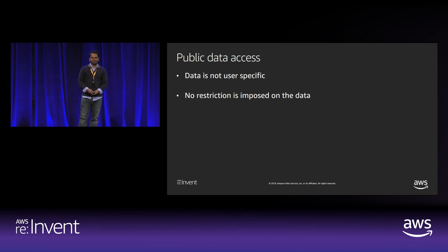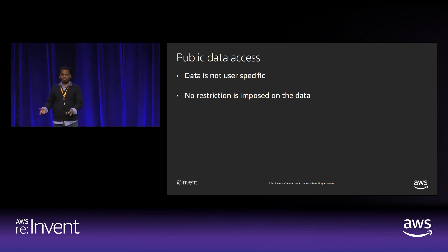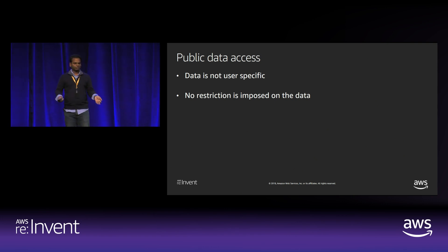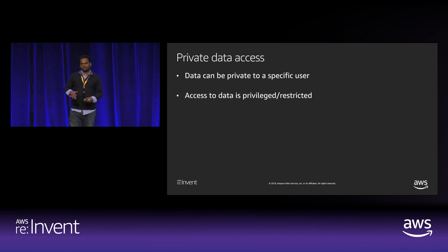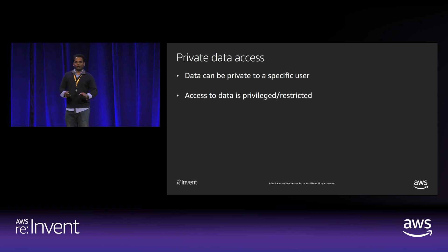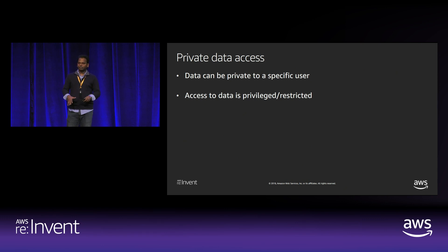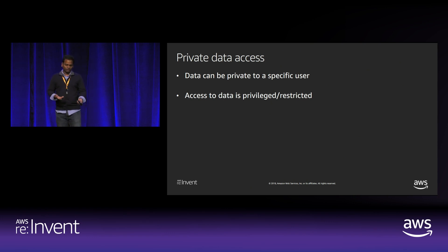Public data access is when the data is not confidential and not user-specific in most cases. Examples include blogs like Medium or the AWS Blog — whenever a blog is posted, that information is publicly consumable by anyone with internet access. Private data access is when the data is private to a particular individual, or confidential so that only certain people can access it. For example, if I'm writing a blog and it's in draft mode, that blog is private to me as the author.